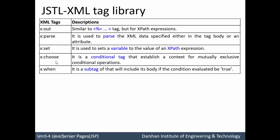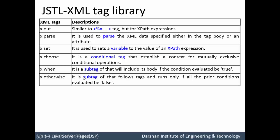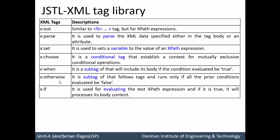x:when is a sub-tag of x:choose, similar to c:when. It will include its body if the condition is evaluated as true. If the condition is evaluated as false, it will select x:otherwise. So x:when and x:otherwise are both sub-tags of x:choose. x:otherwise runs only if the prior condition evaluated as true is not met. x:if is used for evaluating an XPath expression — if it is true then it will process the body content.